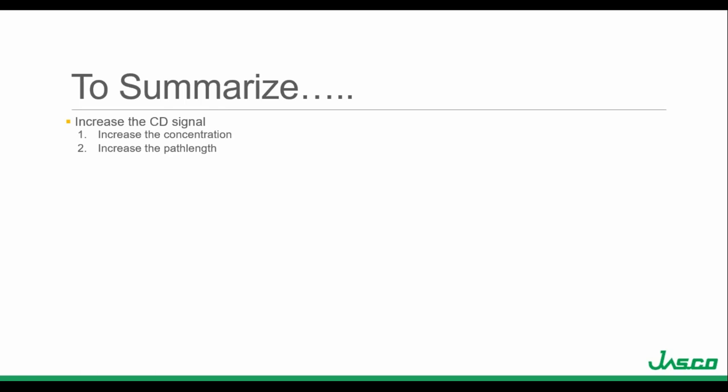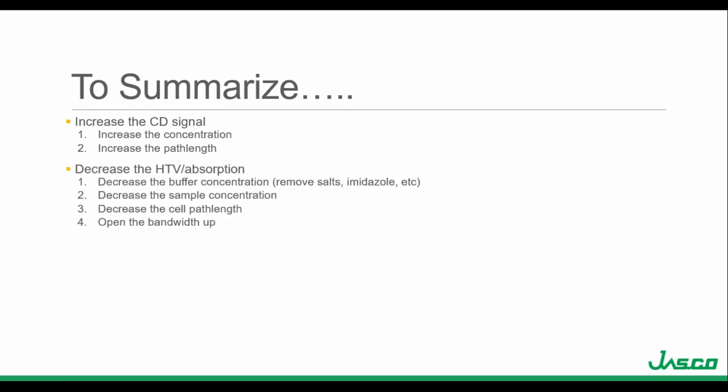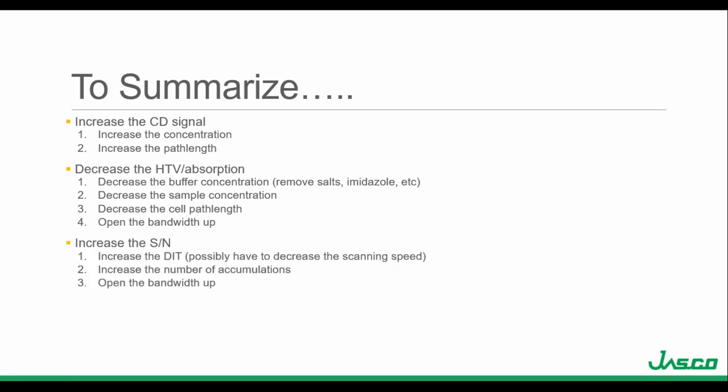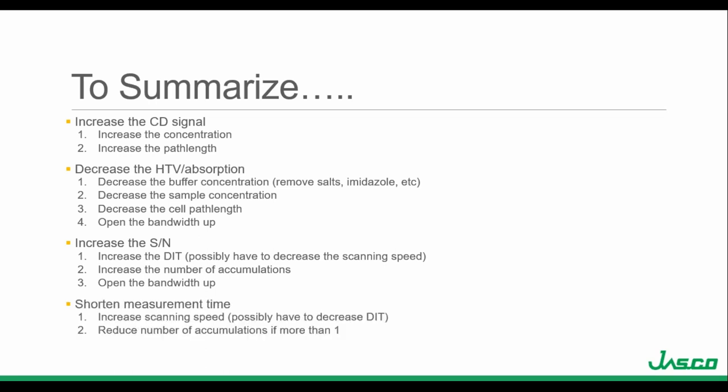To summarize: to increase the CD signal, increase the protein or sample concentration or increase the path length. To decrease the HT voltage or absorption, decrease the buffer concentration and remove any salts, decrease the sample concentration, decrease the cell path length, or open the bandwidth. To increase the signal to noise, increase the DIT — which may mean decreasing the scanning speed — increase the number of accumulations, or open the bandwidth. To shorten the measurement time, increase the scanning speed — which may mean decreasing the DIT — or reduce the number of accumulations.